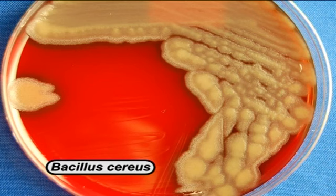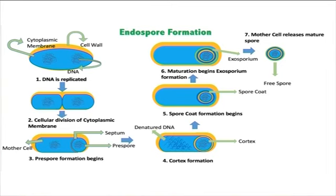In Bacillus cereus, an exosporium, an outer covering, is also present. Vegetative growth and cell division cease during sporulation. Endospores may be present at central, subterminal, or terminal locations of the bacterial cell, as shown in the figure. Endospores may be oval or spherical in shape, and each cell produces only one endospore.